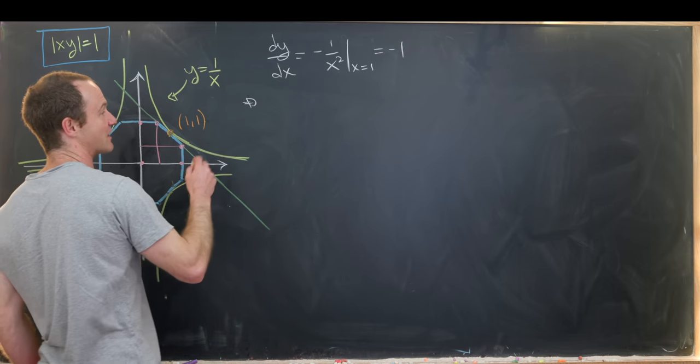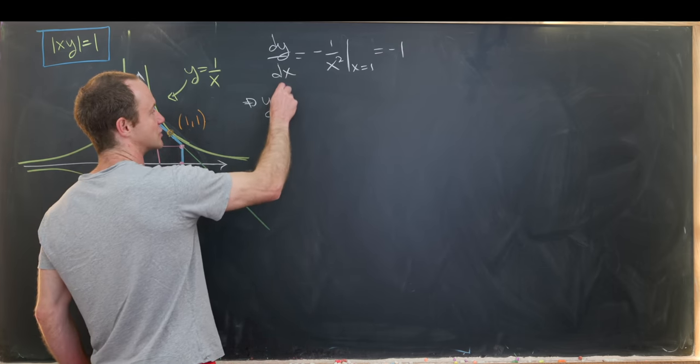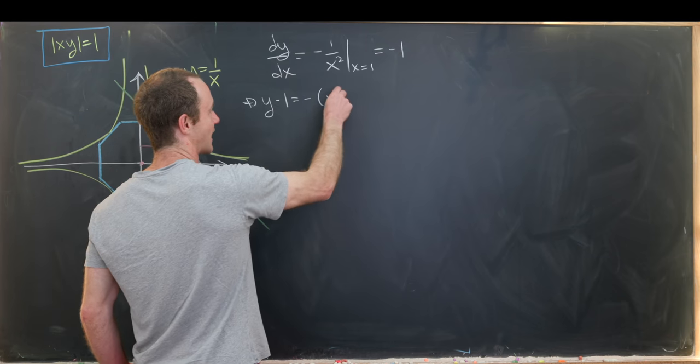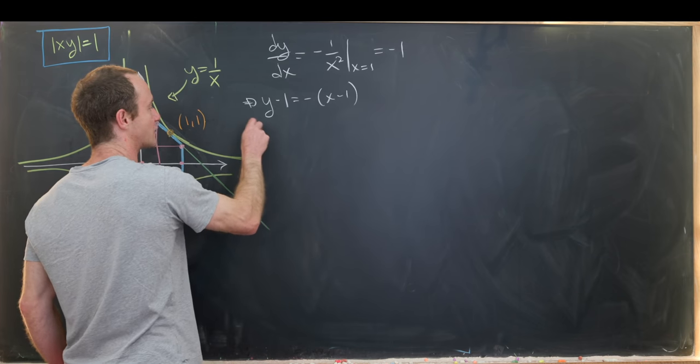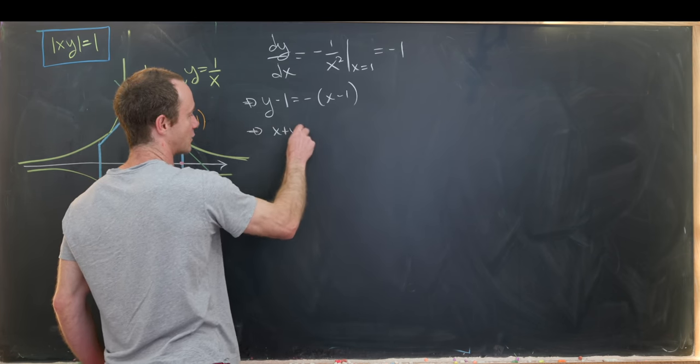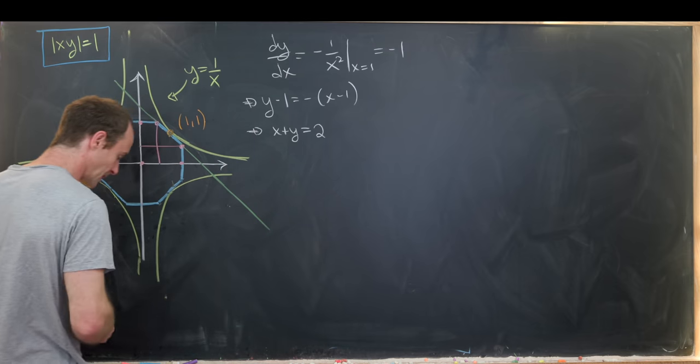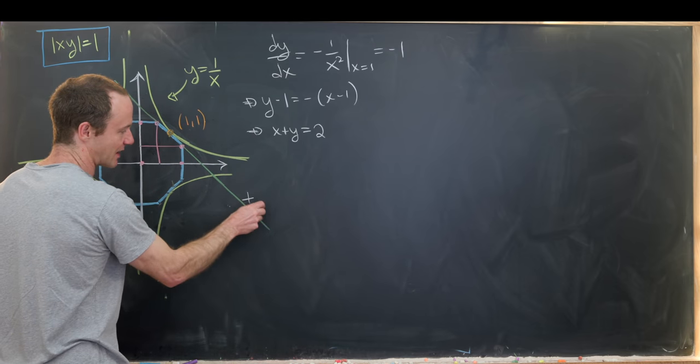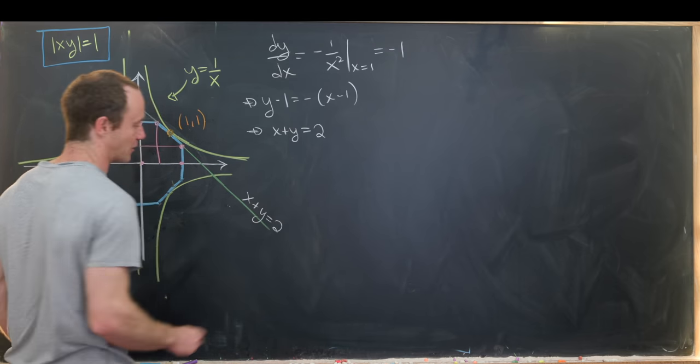So that means by the point slope form we have an equation y minus 1 equals negative x minus 1 which can be rewritten to x plus y equals 2. Which is actually the way that we're going to think about it. That will be most useful for our purposes.